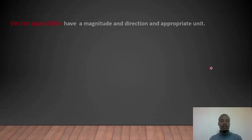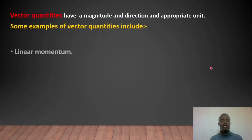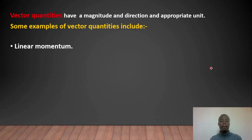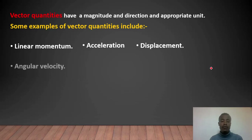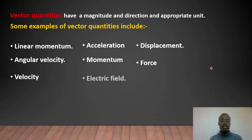A vector quantity requires magnitude, plus direction, plus an appropriate unit. For example, linear momentum equals mass times velocity, with a unit of kilogram meters per second. Vector quantity examples include acceleration, displacement, angular velocity, momentum, force, velocity, and electric field.